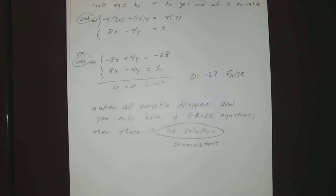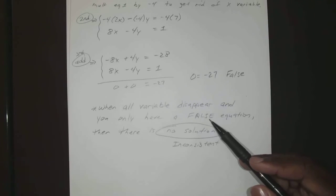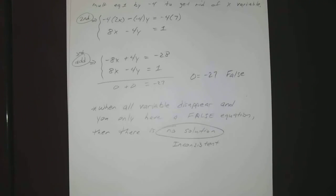Okay, so since we did an inconsistent, we now have to do a dependent, which you know that it will be left with a true equation after all the variables disappear.